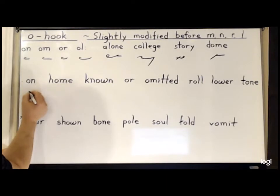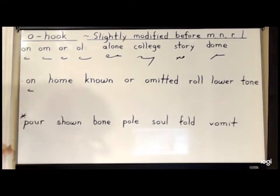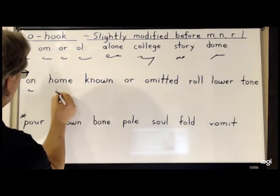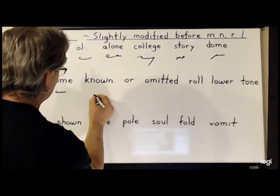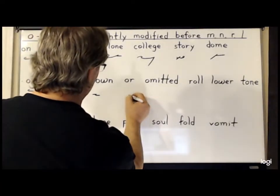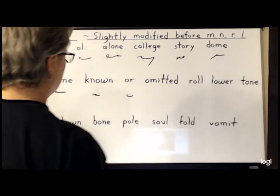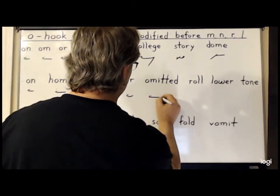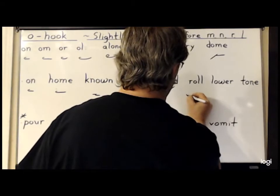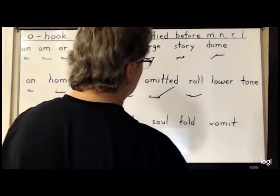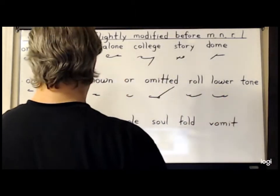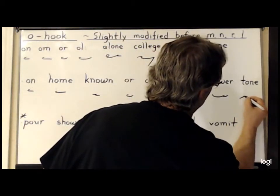For 'on', it is simply O on its side and N. For 'home', it is a dot for the H, O-M. For 'known', it is N-O on its side, N. For 'or', O-R. For 'omitted', O-M-E-T-E-D. For 'roll', it is R, O on its side, L. For 'lower', it is L, O on its side, R. And finally, 'tone' is T-O-N.